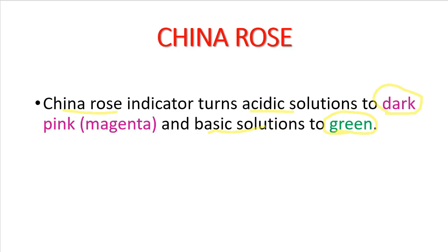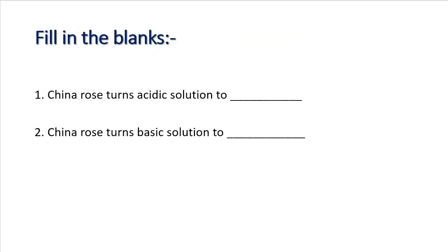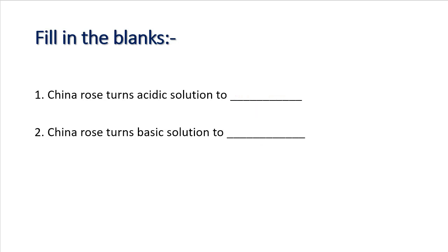China rose turns acidic solutions to dark pink and basic solutions to green, as shown in the picture. Let us check what you have learned: china rose turns acidic solution to dark pink — that is the first blank — and china rose turns basic solution to green. If you have any doubt, you can ask in the comment section.